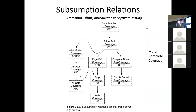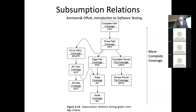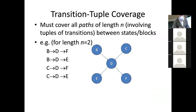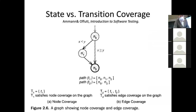Edge coverage is stronger than node coverage because it provides us extra guarantees beyond what nodes cover. And what we're going to be exploring now is higher levels yet. I'm going to offer a very brief comment on edge pair coverage. But really our goal today is to go through prime path coverage, which is a very high level of coverage guarantee. It's not exhaustive — we're not covering all possible paths — but generally that's not going to be possible. Prime path coverage is an excellent level of coverage.